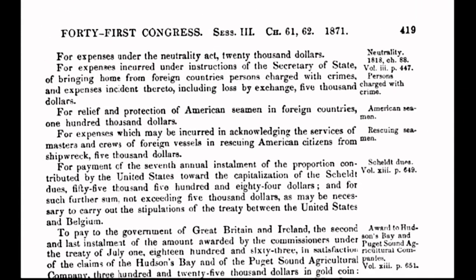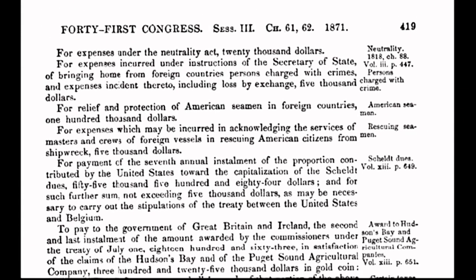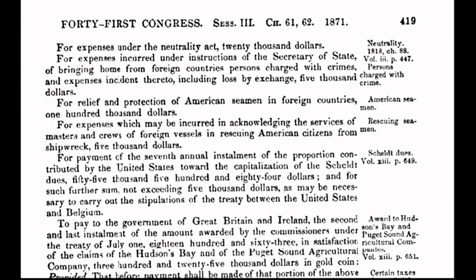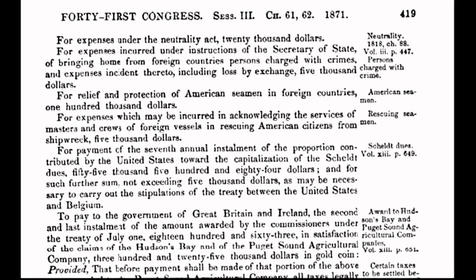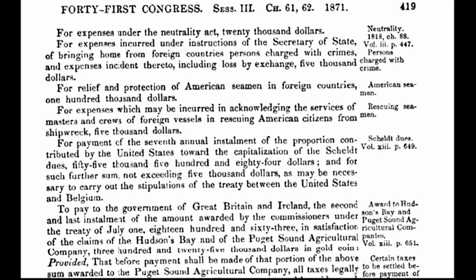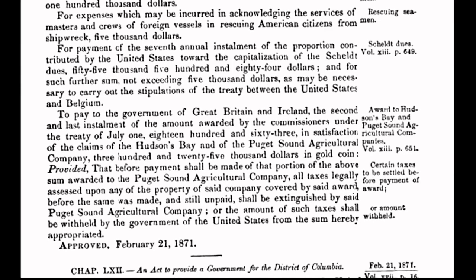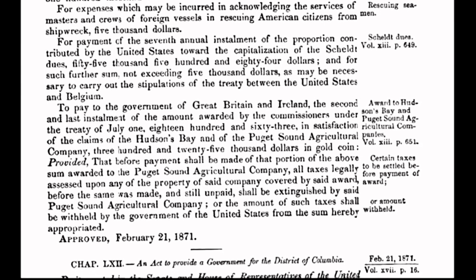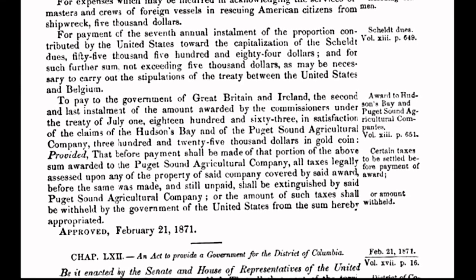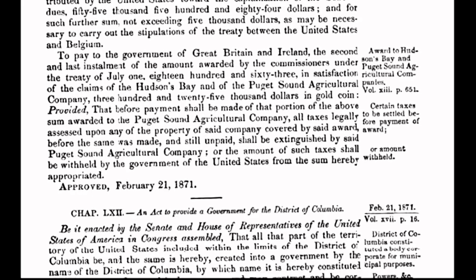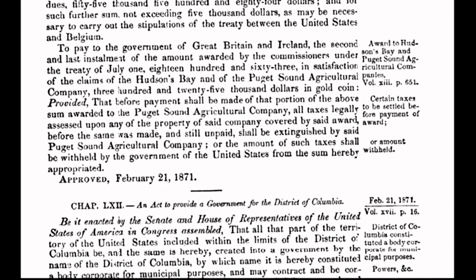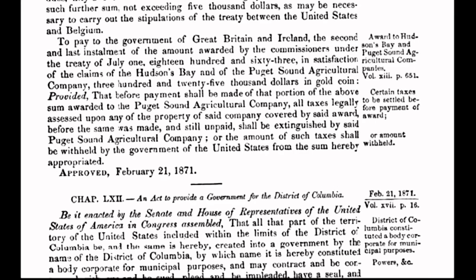In today's program, I will put the spotlight on an act that was enacted on February 21st, 1871. Congress passed an act to provide a government for the District of Columbia, also known as the Act of 1871. When you fully understand the ramifications of the past, you will fully understand the ramifications of the present, and you will know how to change the future. And here is where our story begins.